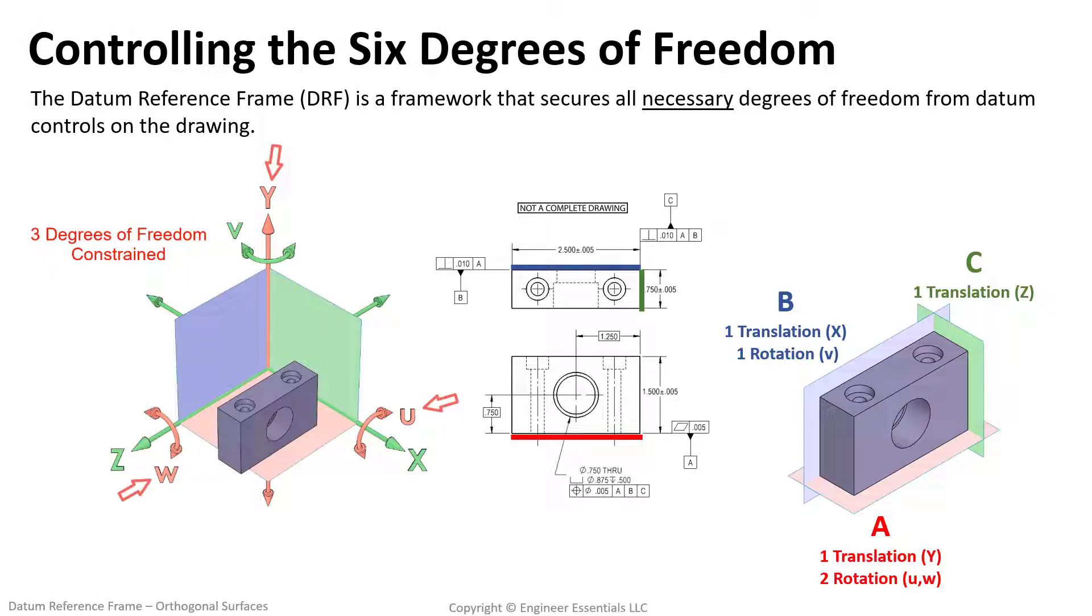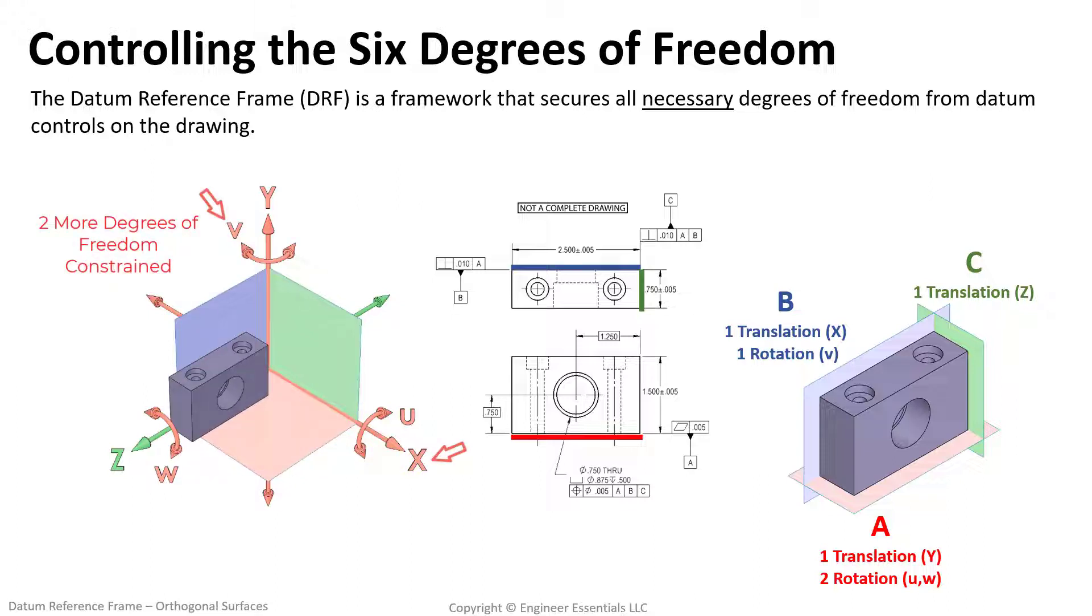This animation will show the degrees of freedom slowly being locked down. First datum A locks in three degrees of freedom leaving three degrees of freedom still open. Then datum B will lock down two more degrees of freedom leaving one degree of freedom still open. Finally datum C locks down the final translation that we were missing.